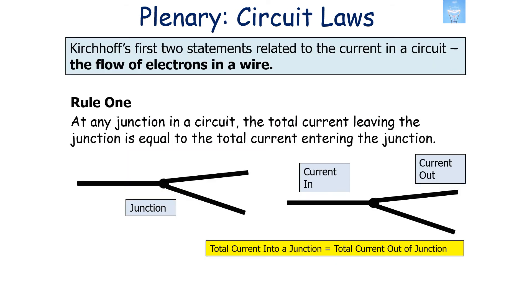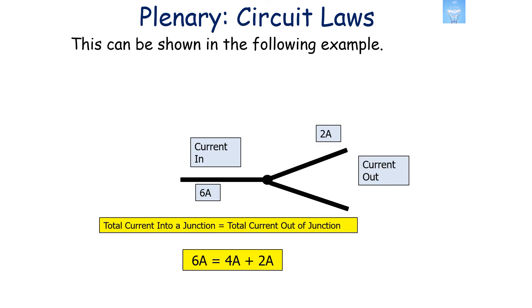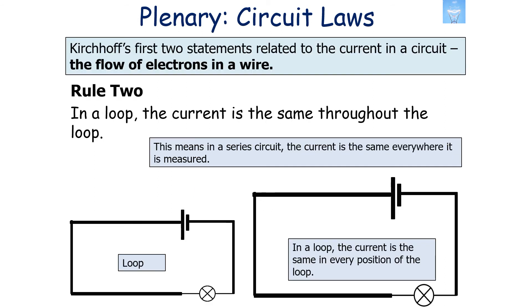Kirchhoff's first two statements relate to current — the flow of electrons in a wire. The first rule is that at any junction in a circuit, the total current leaving the junction is equal to the total current entering the junction. For example, if six amps goes into a junction, six amps must come out — perhaps two amps on one branch and four amps on the other.